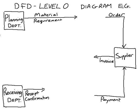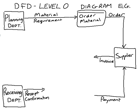The planning department is sending a material requirement out, so we need to change that data flow from an input into a data flow output. We're going to make a process called 'Order Material' — material requirement will go into it, and the actual order will be sent to the supplier.